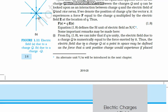Thus the electric field due to charge Q at a point in space may be defined as the force that a unit positive charge experiences. This is important: it is always defined on a unit positive charge, not on a unit negative charge. You always define the field with respect to a unit positive charge.